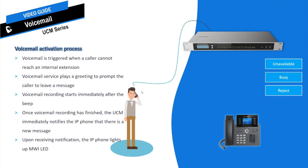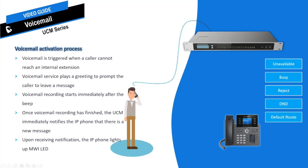Rejecting incoming calls using the reject button on the IP phone will also trigger voicemail. When DND or Do Not Disturb is turned on, incoming calls will go directly to voicemail. Voicemail can also be administratively set up as the default destination for incoming calls.